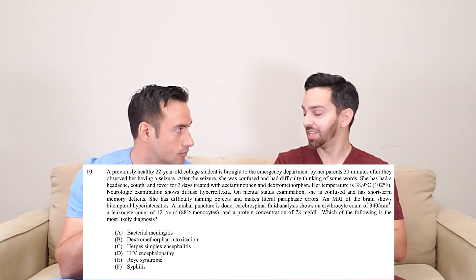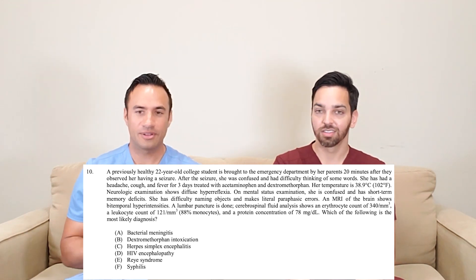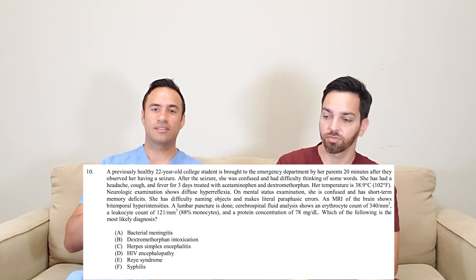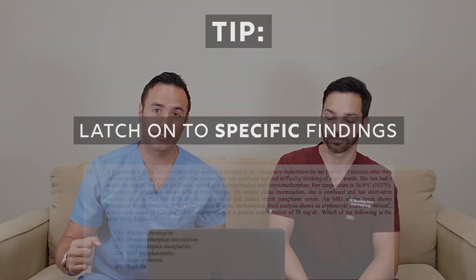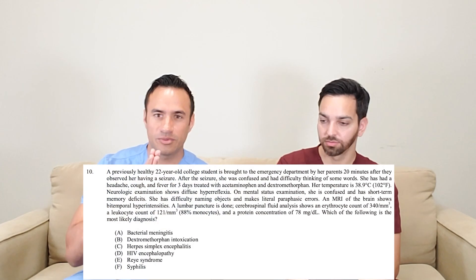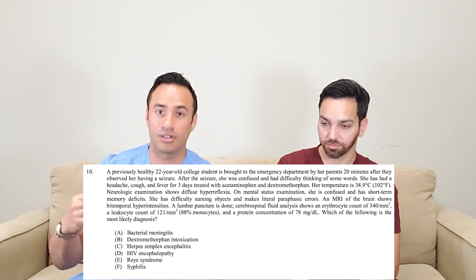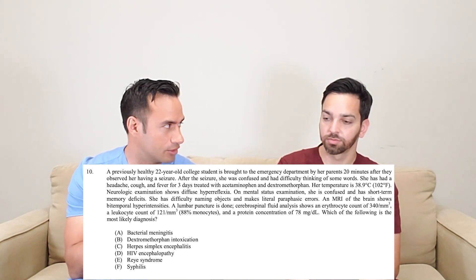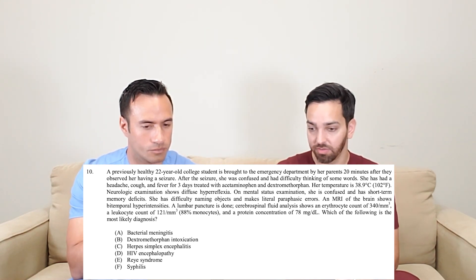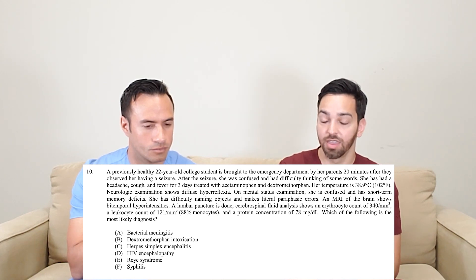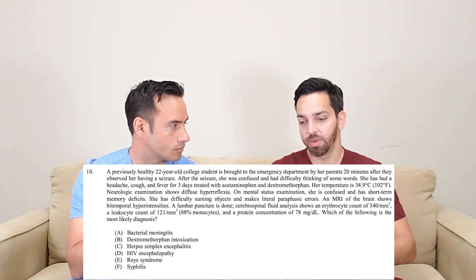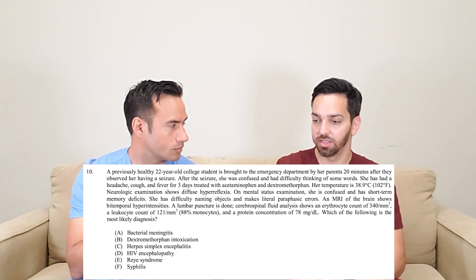So what's the answer? Herpes. I want to take a step back — he mentioned something very characteristic in the stem: the bitemporal hyperintensities. If you find something in a stem that's extremely specific, latch onto it and run with it. When I was reading through it, everything after that point made sense contextually. If you have a very specific finding, run with it and see if everything else lines up and confirms what you already suspect. Bitemporal hyperintensities is pretty specific for herpes simplex encephalitis — they affect the temporal lobes. If you got this wrong, it's probably because you didn't know that fact; go back and review the neurology section.